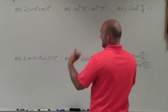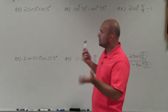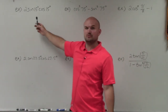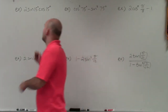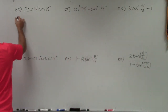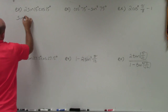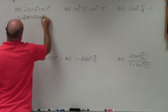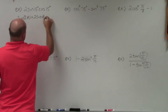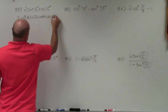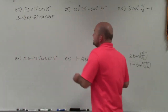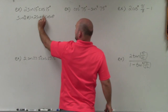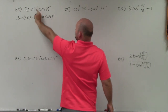Looking through my double angle formulas, I can see that the first expression is very similar to the double angle formula for sine: sine of 2θ equals 2 sine θ times cosine θ. Basically, 15 degrees is the theta here — it's exactly the same, except theta has been replaced with 15 degrees.